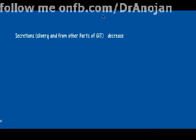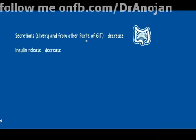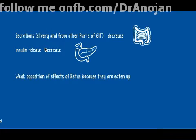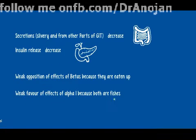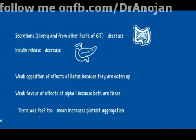Alpha-2 results in decreasing salivary and other GIT secretions. It decreases insulin release, because beta-2 causes increased insulin secretion, but alpha-2 causes decreased insulin secretion. Alpha-2 also has weak opposition to beta effects, and weakly favors alpha-1 effects. The poo in our story means it increases platelet aggregation.